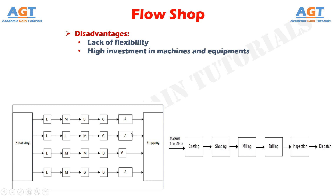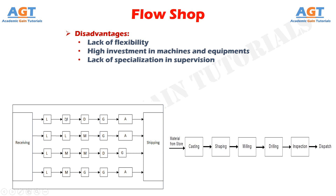Lack of specialization in supervision: manufacturing processes are executed in one line and different types of machines are installed in one line. In job shop manufacturing, a supervisor is supposed to have specialized knowledge about their departmental activities, machines, and processes. But in flow line manufacturing, a supervisor is supposed to have detailed knowledge of all the machines, processes, and activities, causing lack of specialization in supervision.